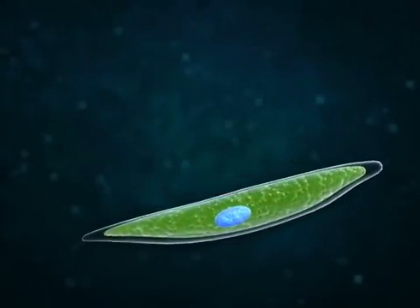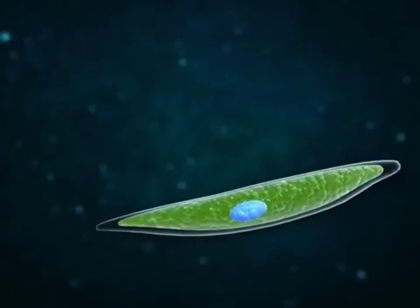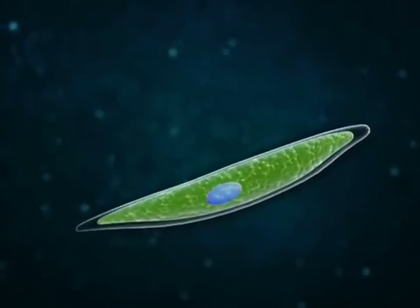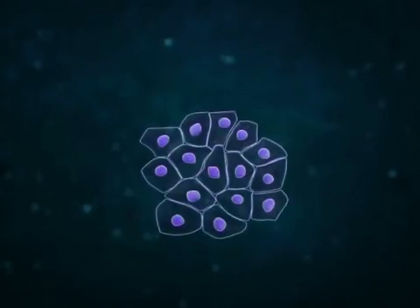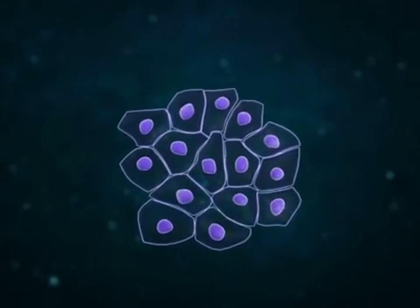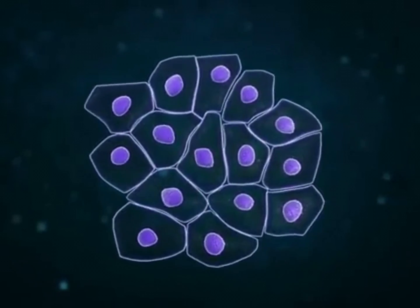The nuclei of cylindrical, prismatic, or fusiform cells are ellipsoid in shape. The cells of the squamous epithelium contain discoidal nuclei.